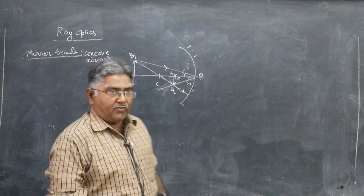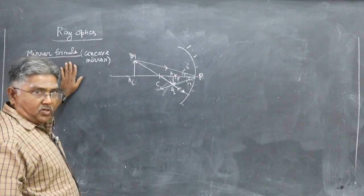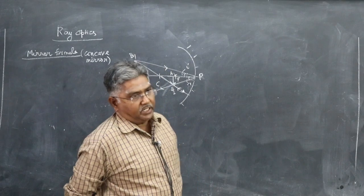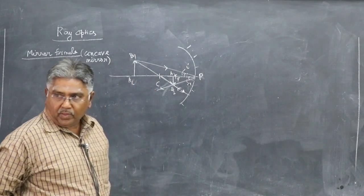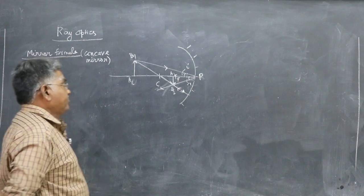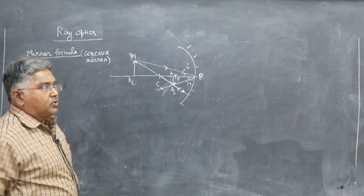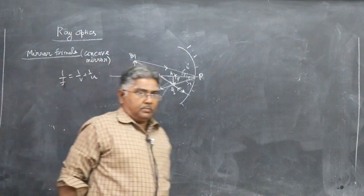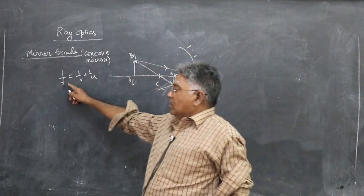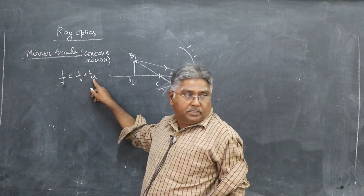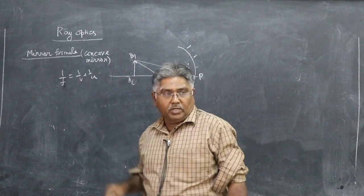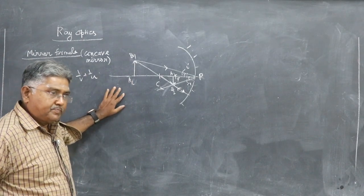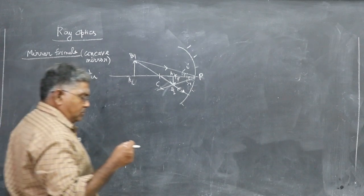In this video we will see the mirror formula for a concave spherical mirror. Even though it is possible to have a concave parabolic mirror or other shapes, we are only considering the concave spherical mirror. The mirror formula is: 1/f = 1/v + 1/u. Here, f is the focal length, u is the distance of the object from the pole, v is the distance of the image from the pole. We will follow the new Cartesian sign convention.